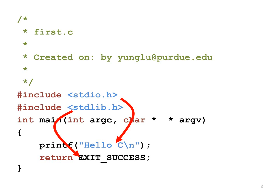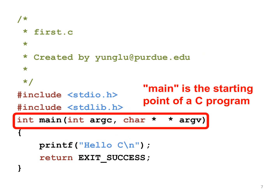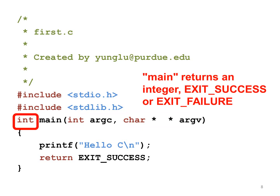stdio.h declares a commonly used function called printf. stdlib.h defines EXIT_SUCCESS. The starting point of a C program is the special function called main. This function returns an integer, so before main we add int. The integer's value can be EXIT_SUCCESS or EXIT_FAILURE.